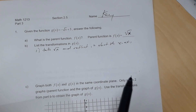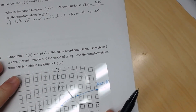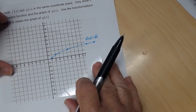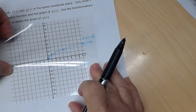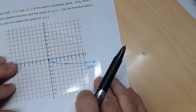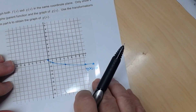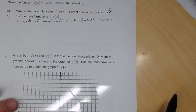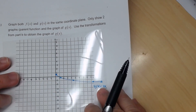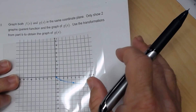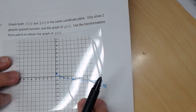So here's the square root function, and you're going to reflect it about the x-axis to get this. Then you're going to take that reflection and shift it up three units — one, two, three. So that's what you're going to end up with.